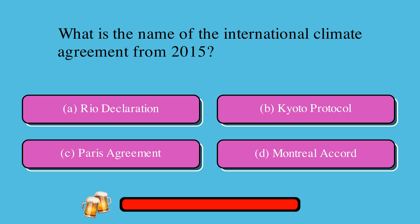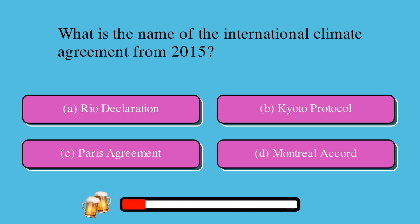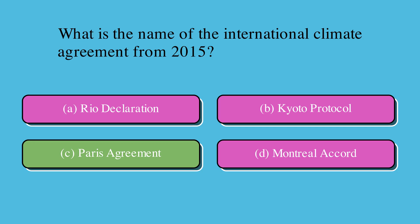What is the name of the international climate agreement from 2015? A. Rio Declaration, B. Kyoto Protocol, C. Paris Agreement, or D. Montreal Accord? The correct answer is C. Paris Agreement.